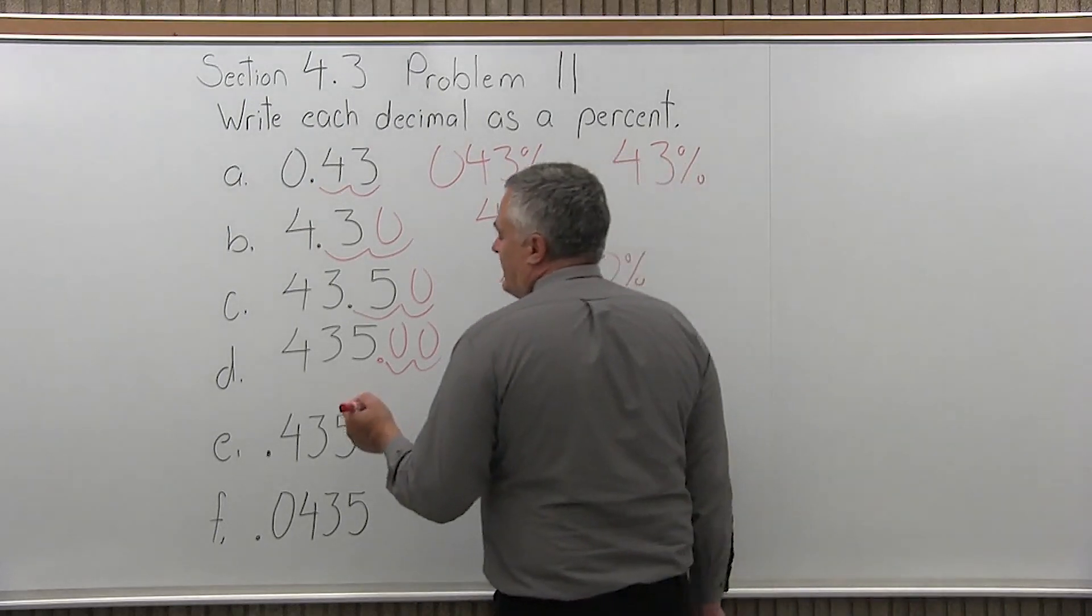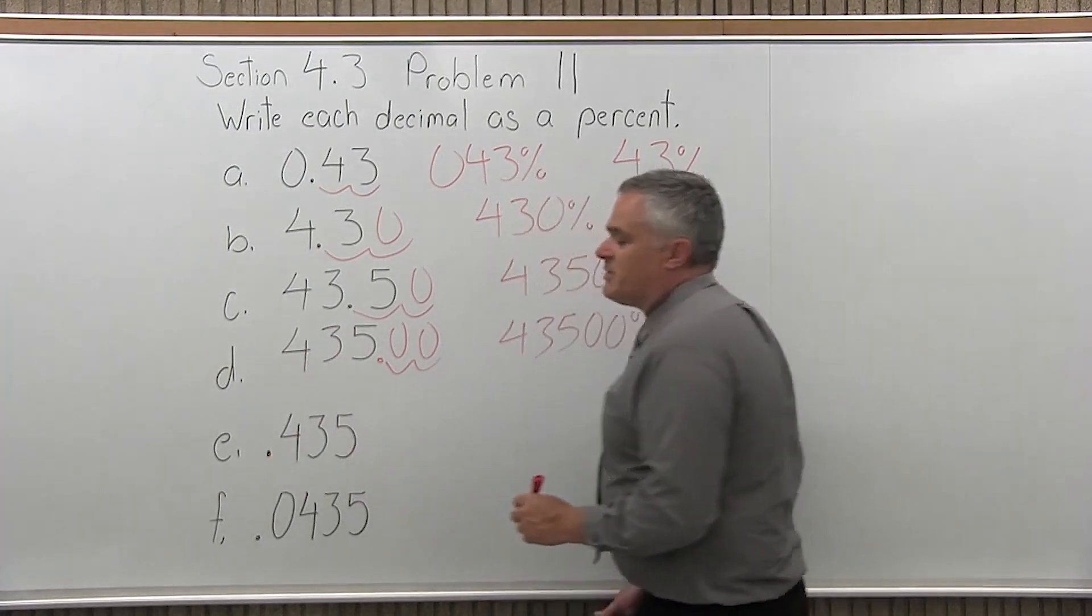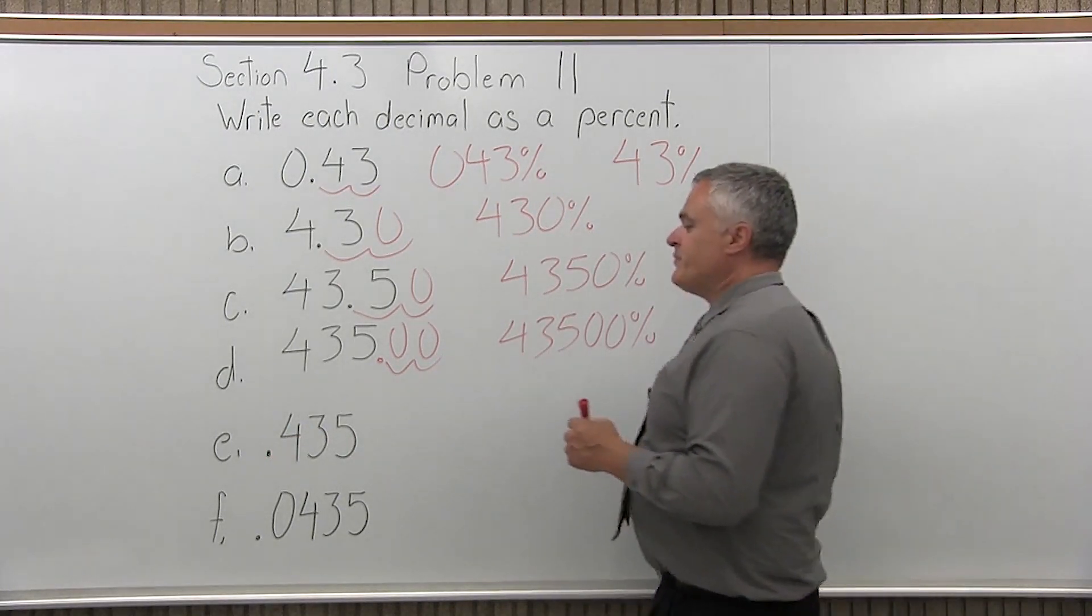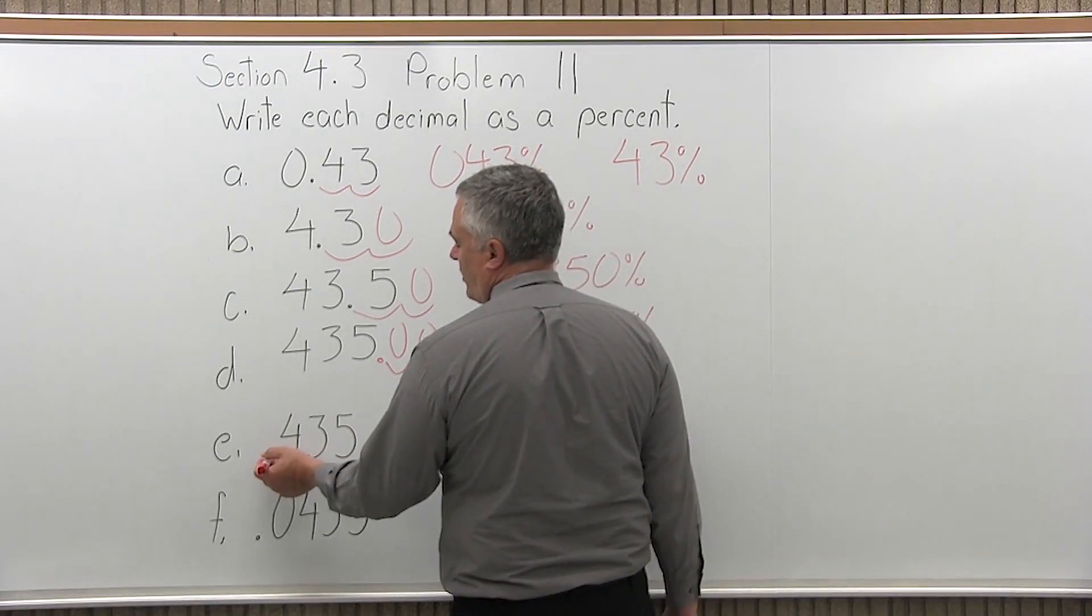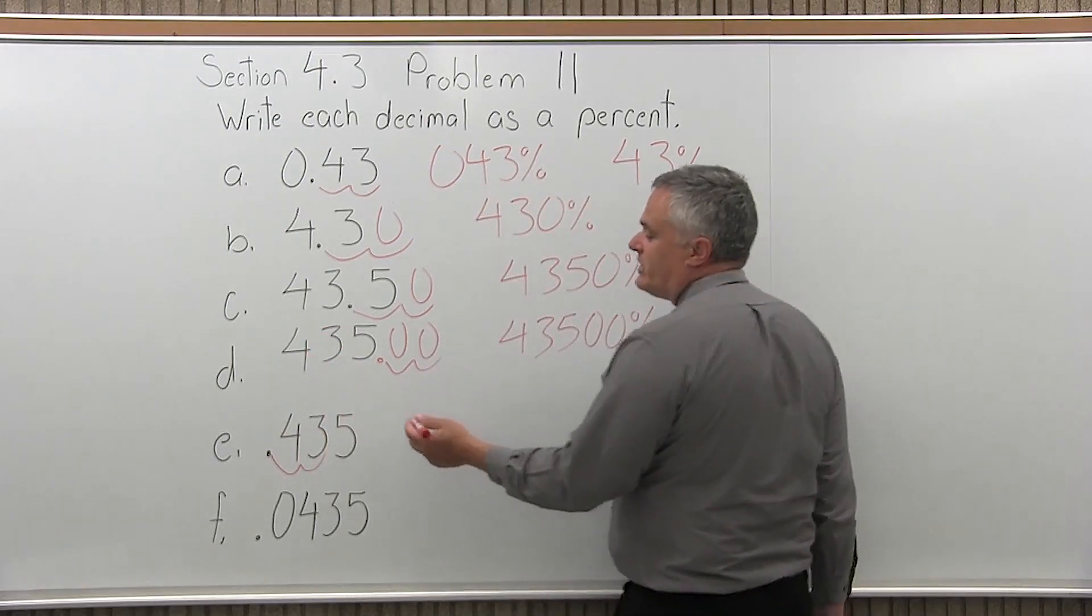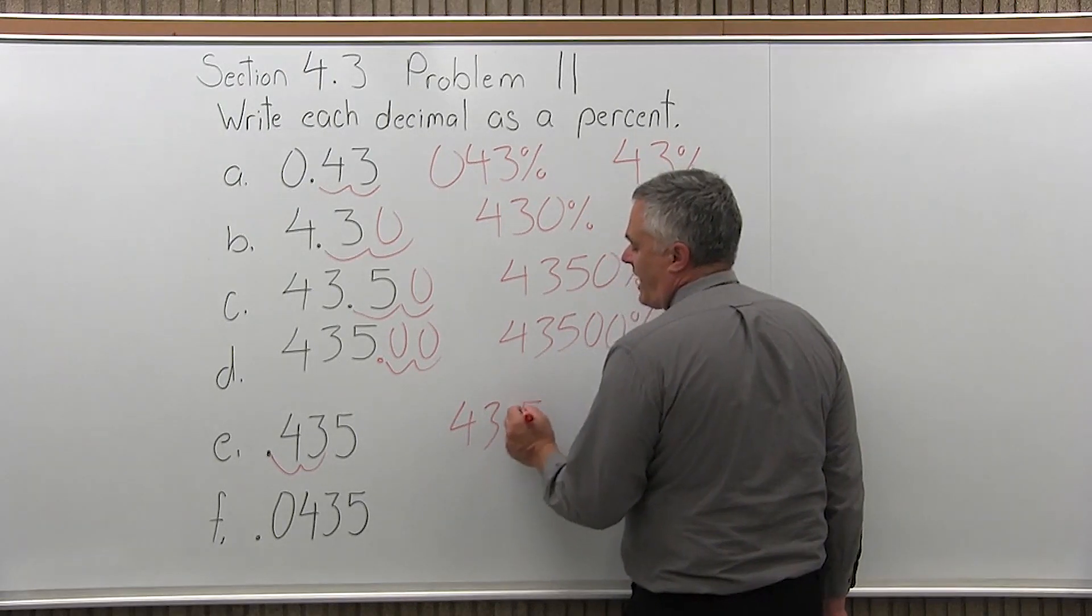Part E, 0.435. Same numbers, but that decimal makes a big difference. Convert 0.435 into a percent. Take the decimal where it is, just before the four, and move it two positions to the right. When you do that, it comes between the three and the five. So that gives you 43.5 percent.